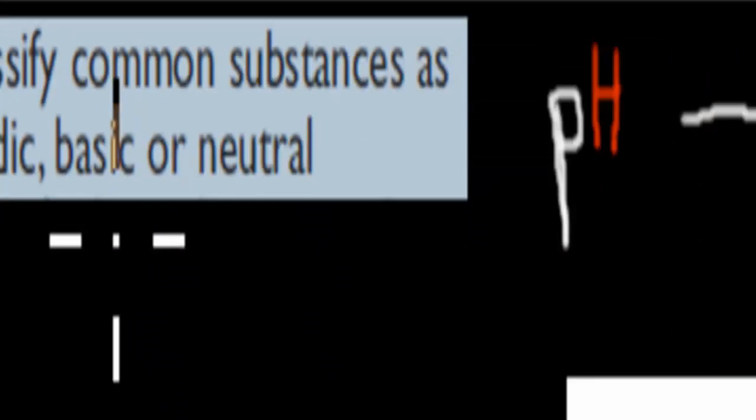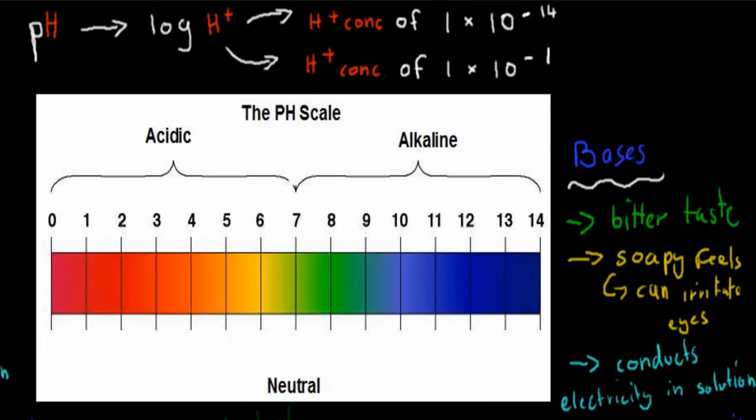The dot point says: classify common substances as acidic, basic, or neutral. Before we start talking about the different ways we can classify substances, I want to make sure we go over the pH scale and what exactly an acid, a base, and a neutral substance is.